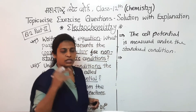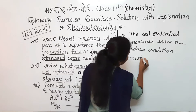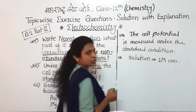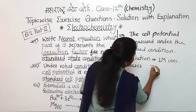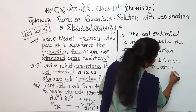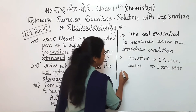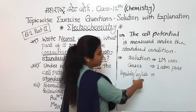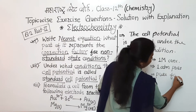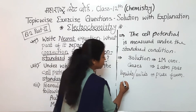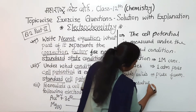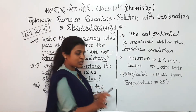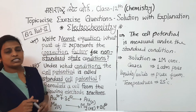The standard conditions are: if there is a solution, its concentration should be 1 molar; if gases are present, they should be at 1 atmospheric pressure; if liquids or solids are present, they should be in their pure form. An important term is temperature — the standard temperature is 25°C. When cell potential is measured under all these conditions, it is called the standard cell potential.